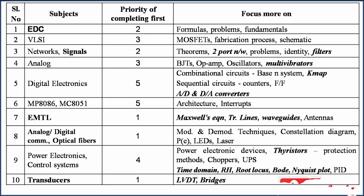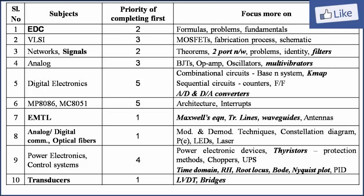In analog, BJTs, PN junction diode, and op-amp topics are very very important. Oscillators are important, multivibrators are very very important. Next, let us talk about digital circuits.